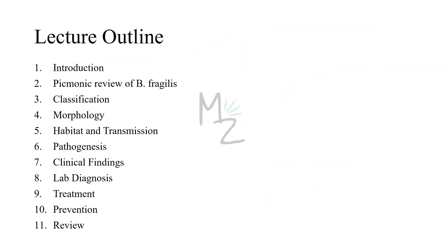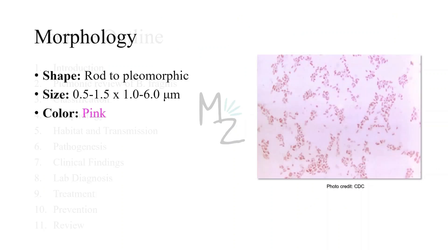Lecture outline: we're done with the introduction, Picmonic review of Bacteroides Fragilis, and bacterial classification. Now we'll be looking at morphology, habitat and transmission, pathogenesis, clinical findings, lab diagnosis, treatment, prevention, and at the end, as usual, we'll review the lecture.